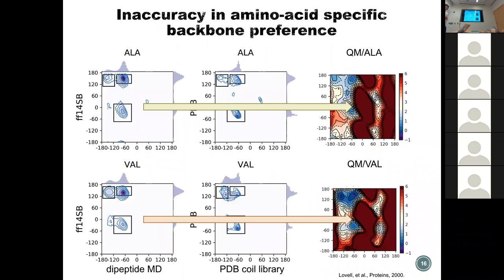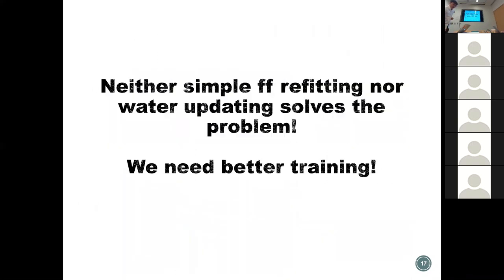Going back to the plot, we think we need to treat different amino acids differently using different quantum mechanics energies. We are more certain after looking at other people's work that neither a simple force field refitting like what Robert Best did, nor just updating the water model, will solve the problem. We really need a more systematic training of the force field.